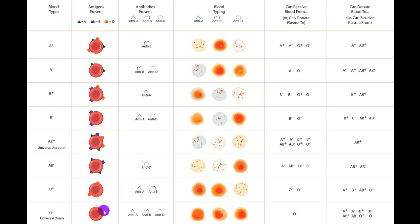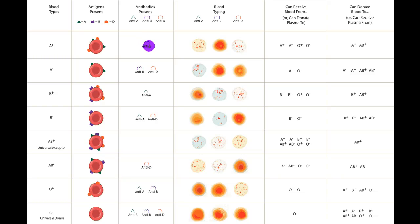For plasma donation, remember that plasma contains antibodies. If you have A positive blood, your plasma contains anti-B antibodies, so you cannot donate your plasma to anyone with the B antigen — that eliminates B positive, B negative, AB positive, and AB negative. You can donate plasma to A positive, A negative, O positive, and O negative. Essentially, you can donate plasma to the same people from whom you can receive blood.